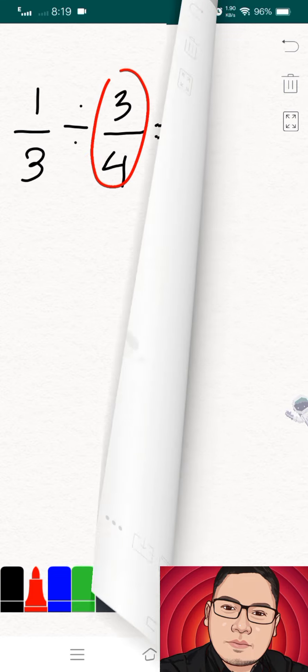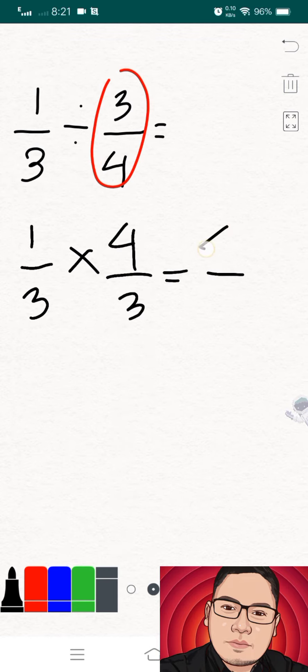So always remember that before you finalize your answer, you have to determine your answer first whether your answer is reducible or not. And as we know, this four over nine is not reducible, therefore this is our final answer.